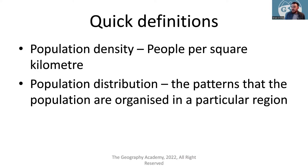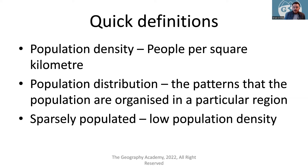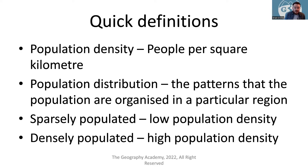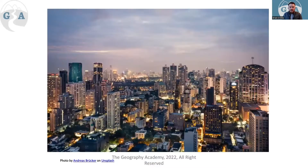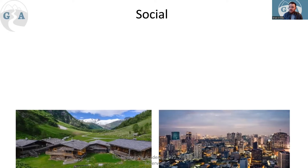Population density is people per square kilometer. Population distribution is how people are organized into particular regions. Sparsely populated areas are areas with a low population density, and densely populated areas are areas of high population density. For example, a sparsely populated area might be up in the mountains, perhaps because of a lack of resources or colder weather. A typical urban environment, with lots of high-rise buildings, transport facilities, and parks, would be densely populated — a harsh contrast to the other.